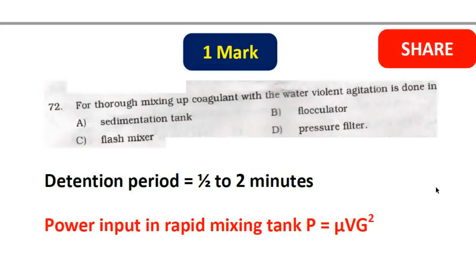Coagulants are mixed in a tank. The options are: sedimentation tank, flocculator, flash mixer, and pressure filter. The flash mixer performs rapid mixing. The flocculator is slow — gentle and slow motion. Flash mixer detention period is 0.5 to 2 minutes. For thorough mixing with violent agitation, the flash mixer is the correct answer.